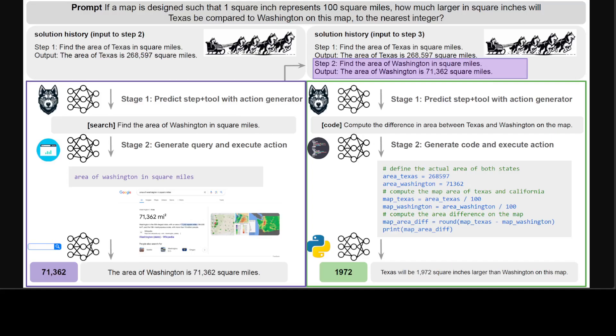Based on the tool assigned by the action generator, Husky calls the corresponding tool, executes the tool, and rewrites the tool output optionally into natural language. Each tool is associated with an expert model: a code generator for code, a math reasoner for math, a query generator for search, and a common sense reasoner for common sense.